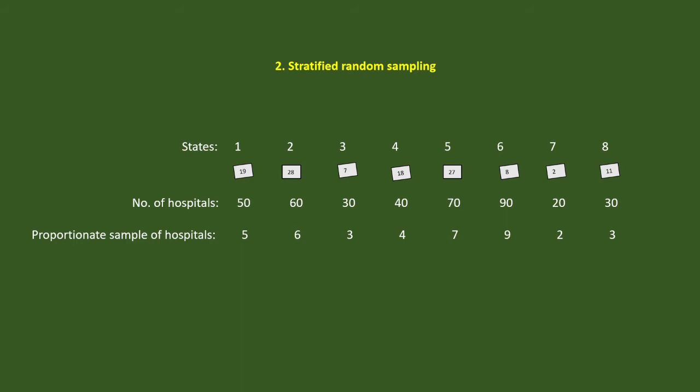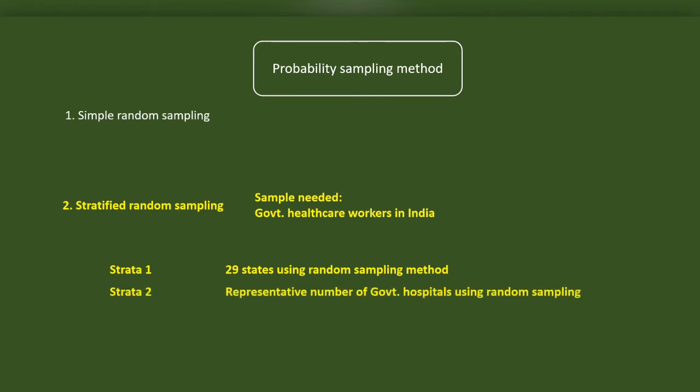We will select a random sample of hospitals in an exact proportion such as 5 hospitals from the first state, 6 from the second, 3 from the third and 4, 7, 9, 2 and 3 from each state. This is the second strata. From each of these hospitals, we will randomly choose the participants again in proportion to the number of healthcare workers. This will become the third strata.